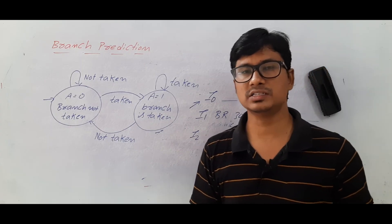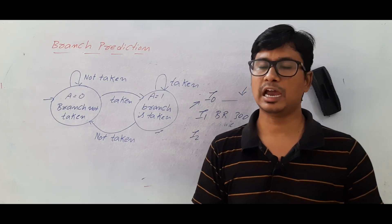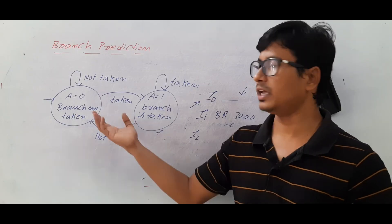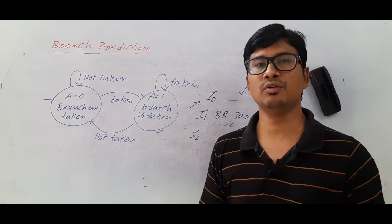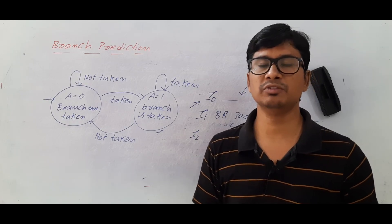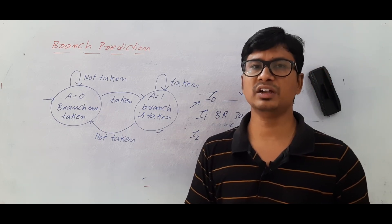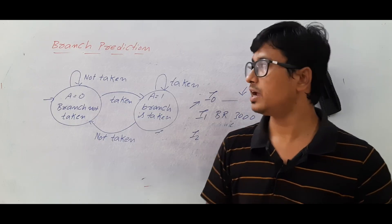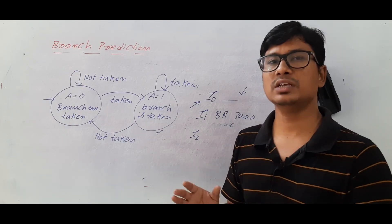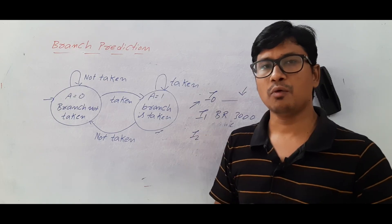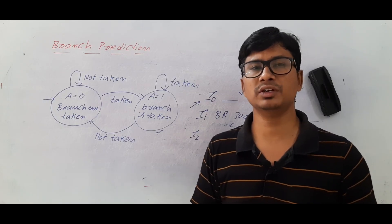To summarize, we discussed control hazards and two ways to predict branches: static prediction and dynamic prediction. Dynamic prediction is better because it adapts based on past results. This concept is very important for the GATE exam, so please watch the video completely. If you have any doubts, feel free to ask in the comments — I will try to respond within 24 hours. Thank you for watching, have a nice day.